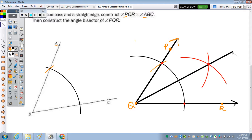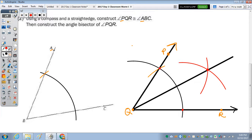And there is angle PQR congruent to angle ABC. And then the bisector of angle PQR.